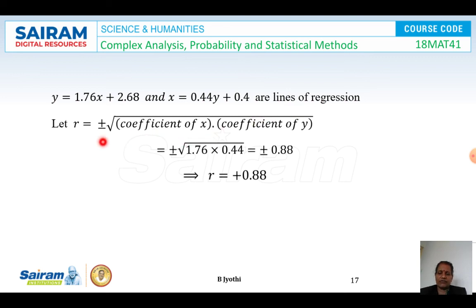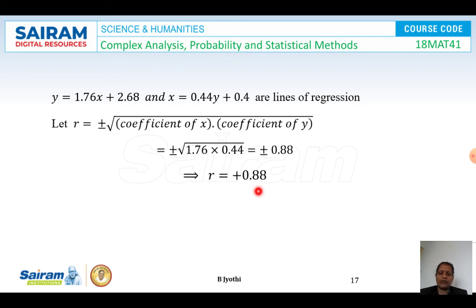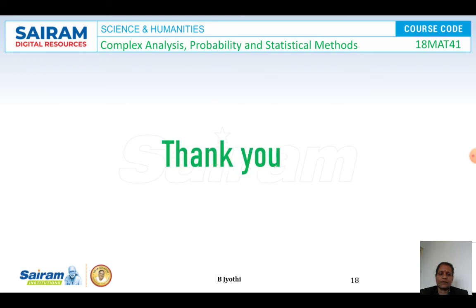The correlation coefficient r is given by the formula: r = ±sqrt(coefficient of x in regression y on x × coefficient of y in regression x on y). The coefficient of x is 1.76 and the coefficient of y is 0.44. Since both coefficients are positive, r is also positive, indicating a positive correlation between the two variables. Thank you.